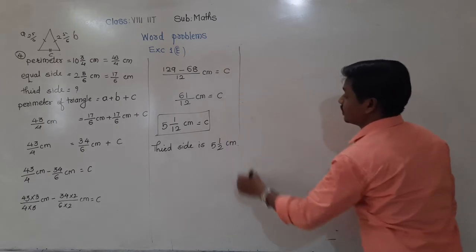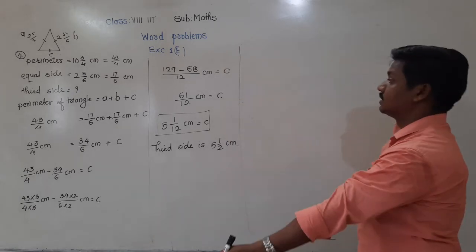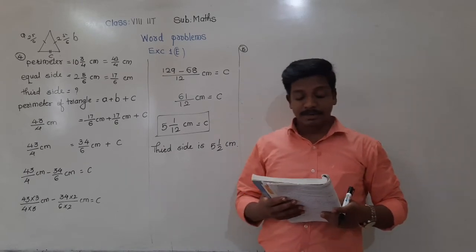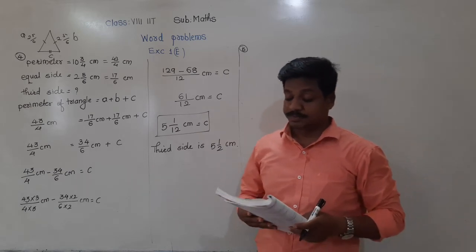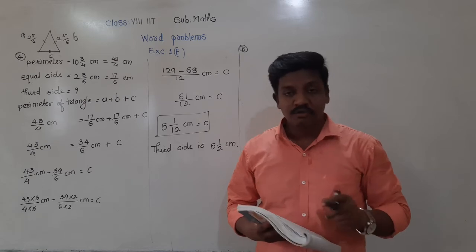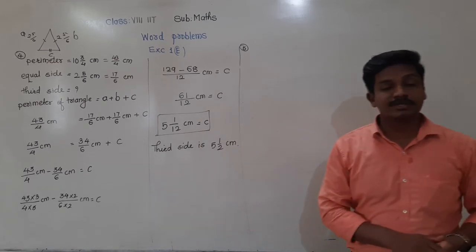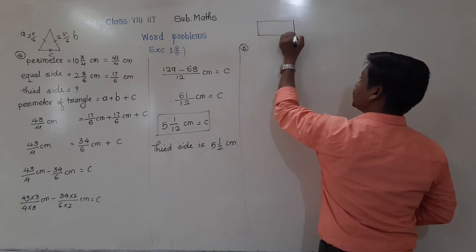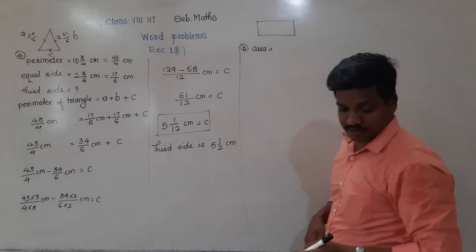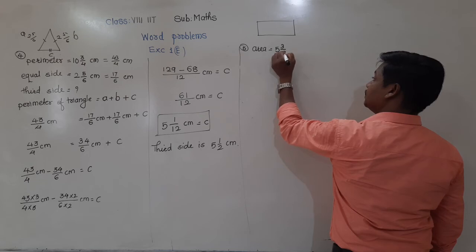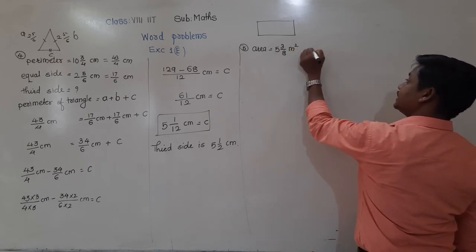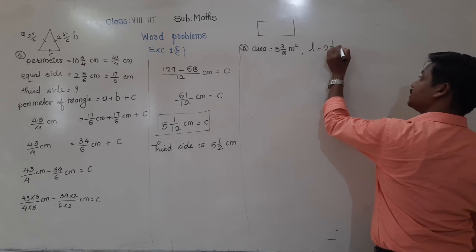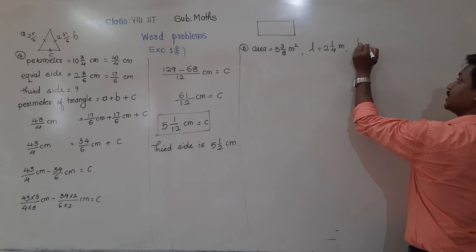Fifth problem: the area of a rectangular tabletop is 5 integer 3 upon 8 centimetre square. If one of the sides measures 2 integer 1 by 4 centimetres, find the length of the other side. This problem is related to the rectangle — the area of the rectangle is given, and the length is given as 2 integer 1 by 4 centimetres. We have to find the breadth.